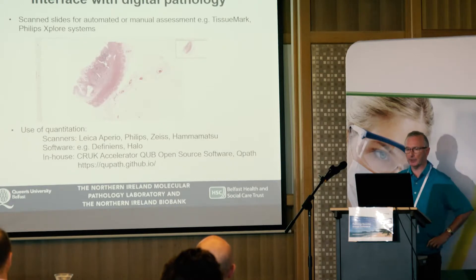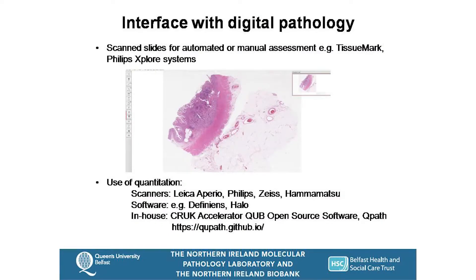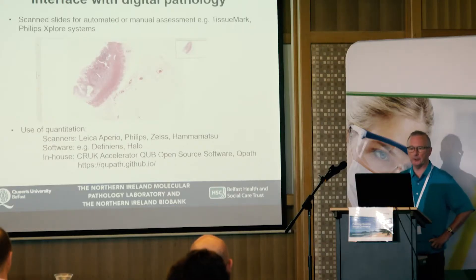Looking at the interface with digital pathology: the Philips scanning system, for example — when we scan, using IntelliSight or something similar, a pathologist can manually give a diagnosis or manually annotate, or send it off to a quantitative system to determine how many cells are present, what the tumour content is, what the Ki-67 count is, etc. We have to think about different scanners — we have different scanners on site — and different software: Finians, Helio, VisioPharm, and we know of others.